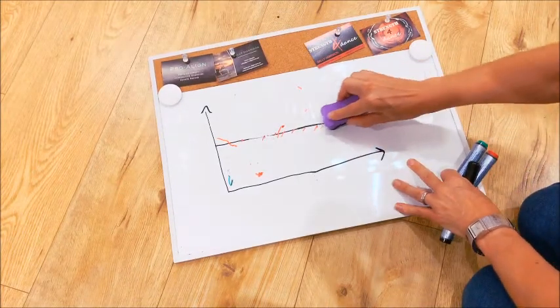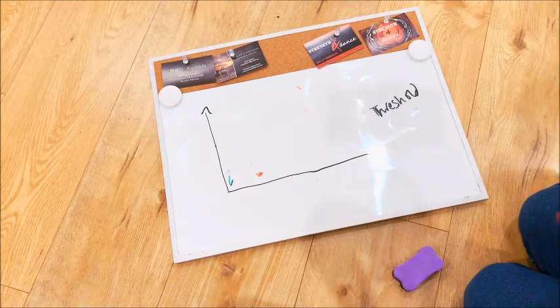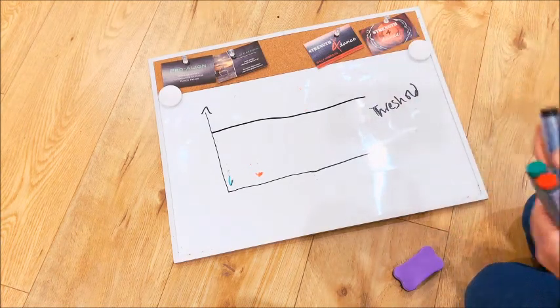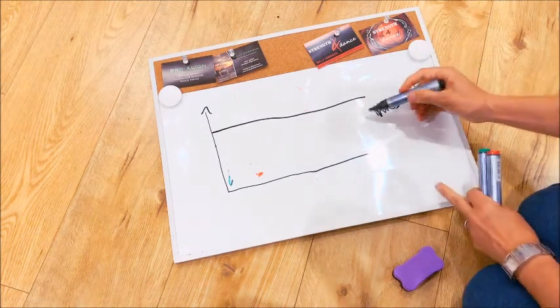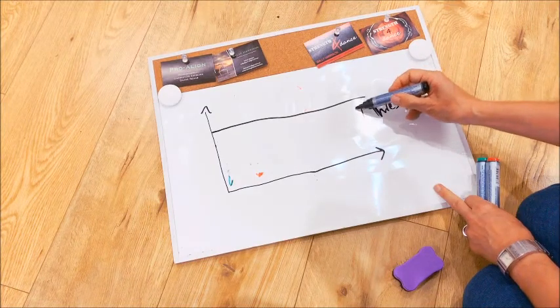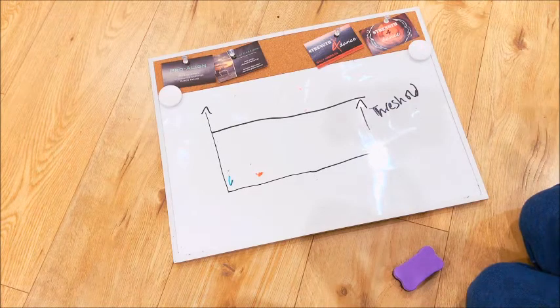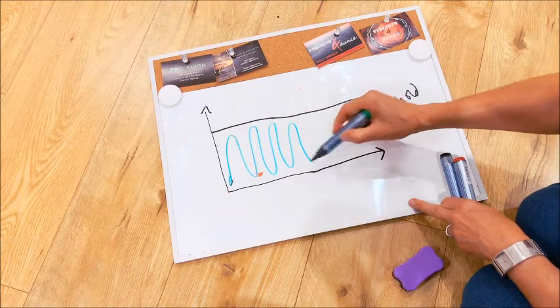Now the more training we do, you can actually increase the level of your threshold. So the more strength training I do, the stronger and more robust my fascia is, the better my nerves respond and the better my muscle tissue, my threshold is actually going to increase. And that means my buffer area is a lot bigger for my training.